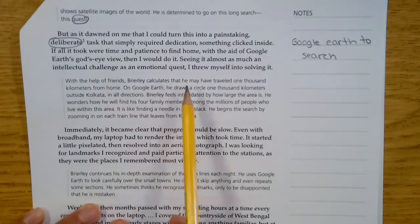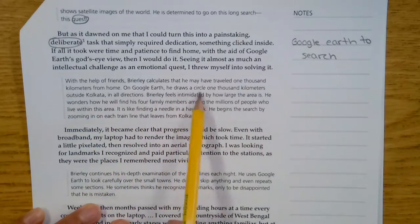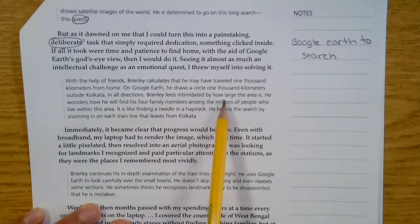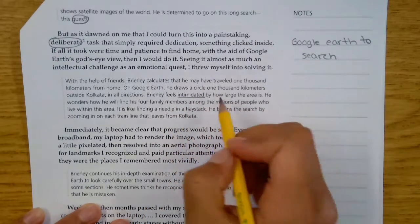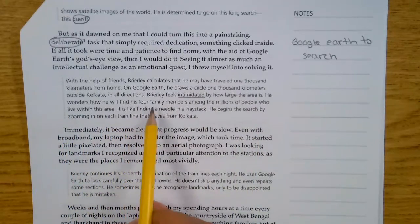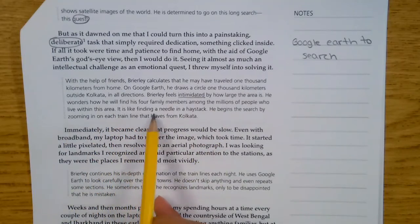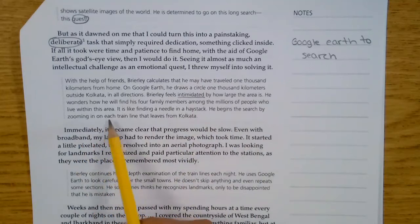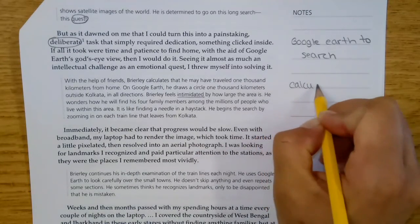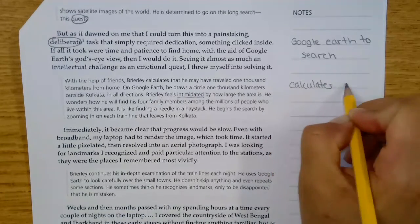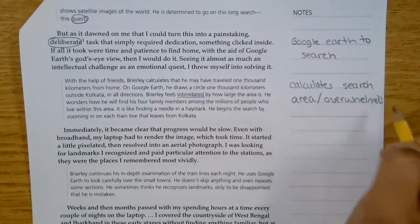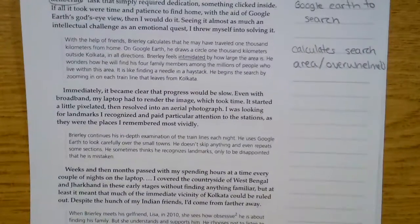With the help of friends, Brierley calculates that he may have traveled 1,000 kilometers from home. On Google Earth, he draws a circle 1,000 kilometers outside Kolkata in all directions. Brierley feels intimidated by how large the area is. So he feels intimidated, so it's kind of like he's overwhelmed a little bit because he has a big search area to look in. He wonders how he will find his four family members among the millions of people who live within this area. It is like finding a needle in a haystack. He begins the search by zooming in on each train line that leaves for Kolkata. So here we see that he is calculating his search area, but he's also feeling overwhelmed because he has a lot of area to look in. So he's a little overwhelmed, a little scared.